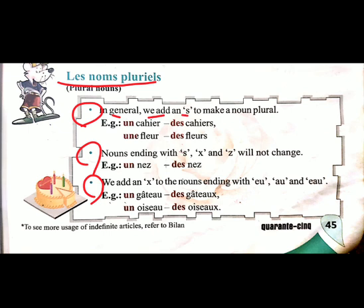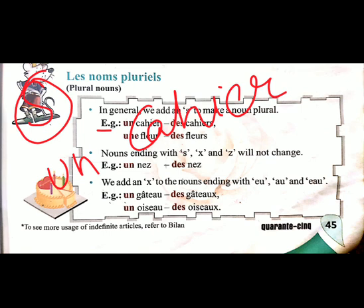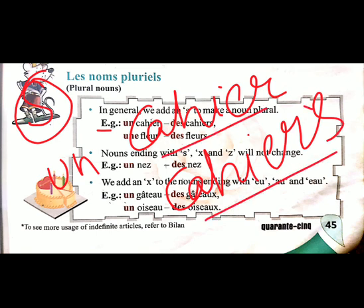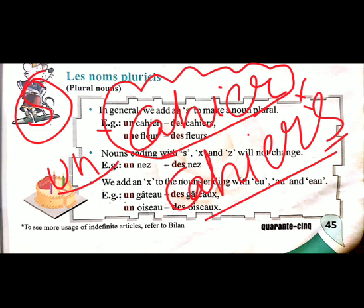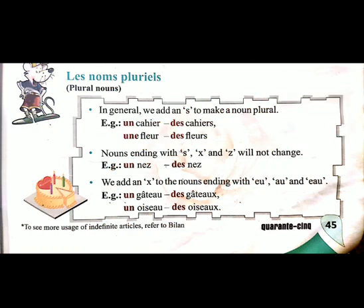Rule one: in French we generally add 's' to make a noun plural, just like in English. For example, cahier means notebook. The plural cahiers is also written as cahiers, but we do not pronounce the 's' — it is silent. We write 's' but do not sound it. Similarly, fleur means flower, and the plural is des fleurs.